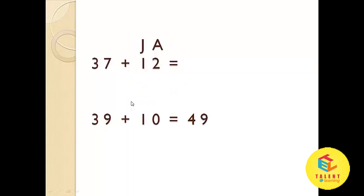Now let's have the jumping tens trick for addition. J is for jumping tens and A is for addition. So 2 is to add and 10 is to jump. So 37 plus 2 is equal to 39, and then jump on 10: 39 plus 10 is equal to 49. So the answer is 49.